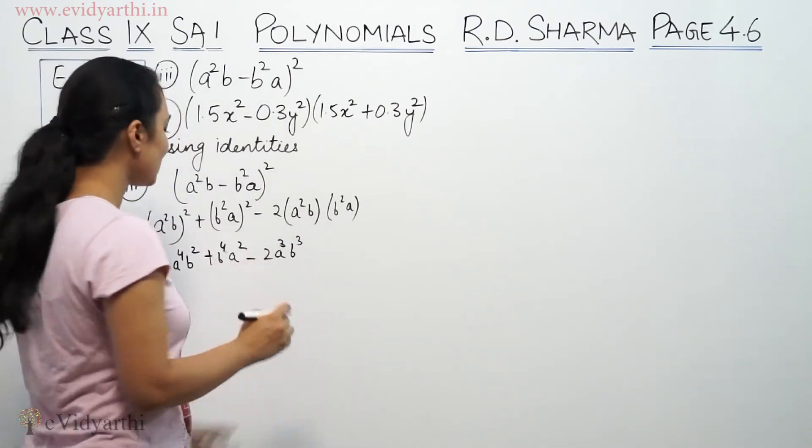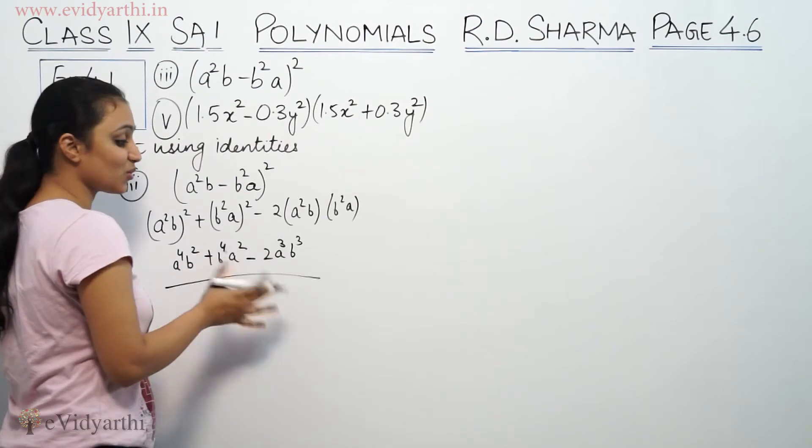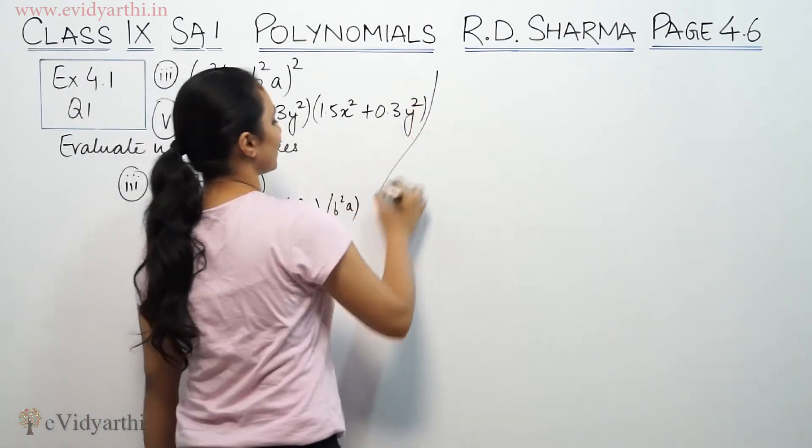Now these terms we cannot solve further. It stays as it is because these terms cannot be subtracted. Only like terms can be combined.